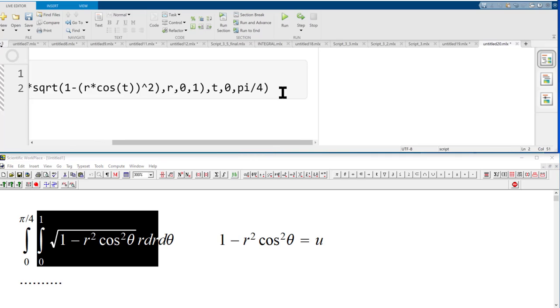So the answer is 16 minus 8 square root of 2 units. You can finish this and compare your answer.